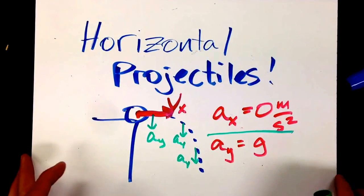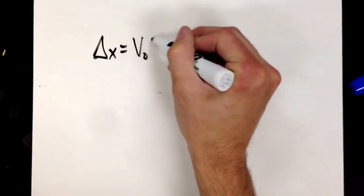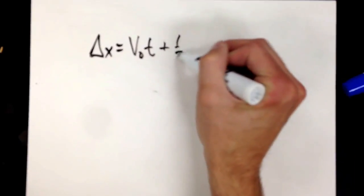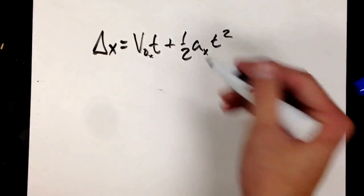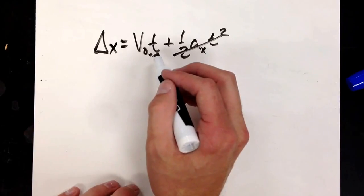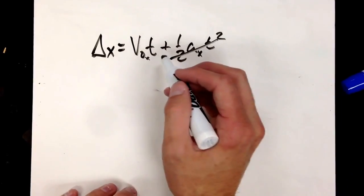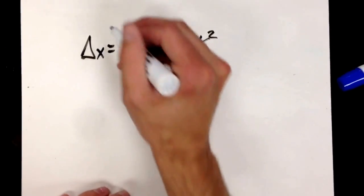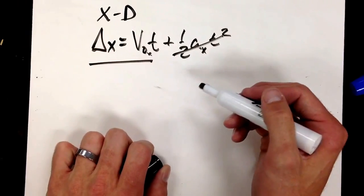Because of that assumption, we can really only use one kinematic for the x dimension, and that is delta x equals v-naught times t plus one-half a_x t-squared. Since acceleration is zero, this simplifies to delta x equals v-naught-x times t — or distance equals velocity times time. For the x dimension, this is the only equation you will have at your disposal.